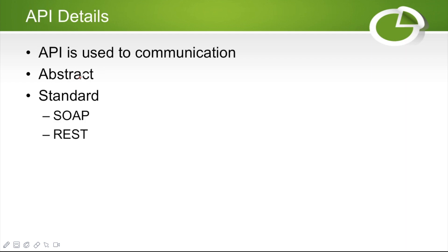Now let's look at what details are used in the API. The API is used for communication — it is a real-time data communication where you are sending some data from one point to another point, and that other point sends you back a response which you process.